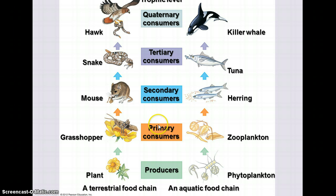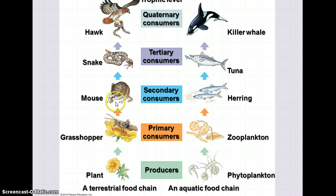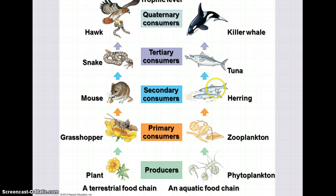This shows a couple of different food chains. On the left we have a terrestrial or land-based food chain, and on the right an aquatic food chain, showing examples of organisms at different trophic levels. Plants and phytoplankton are the producers. Primary consumers eat the producers; secondary consumers eat the primary consumers — for example, a mouse eating a grasshopper or herring eating zooplankton. Tertiary consumers eat the secondary consumers, and quaternary consumers eat the tertiary consumers. If a hawk eats a mouse it's a tertiary consumer; if a killer whale eats herring rather than tuna, it's a tertiary consumer.